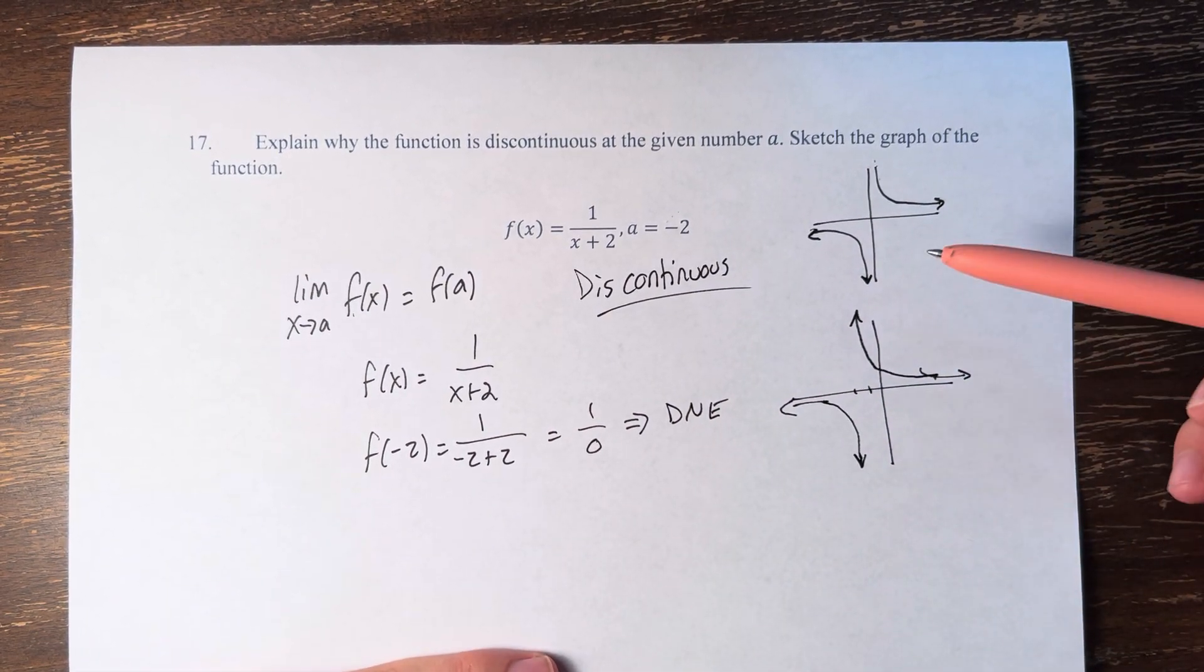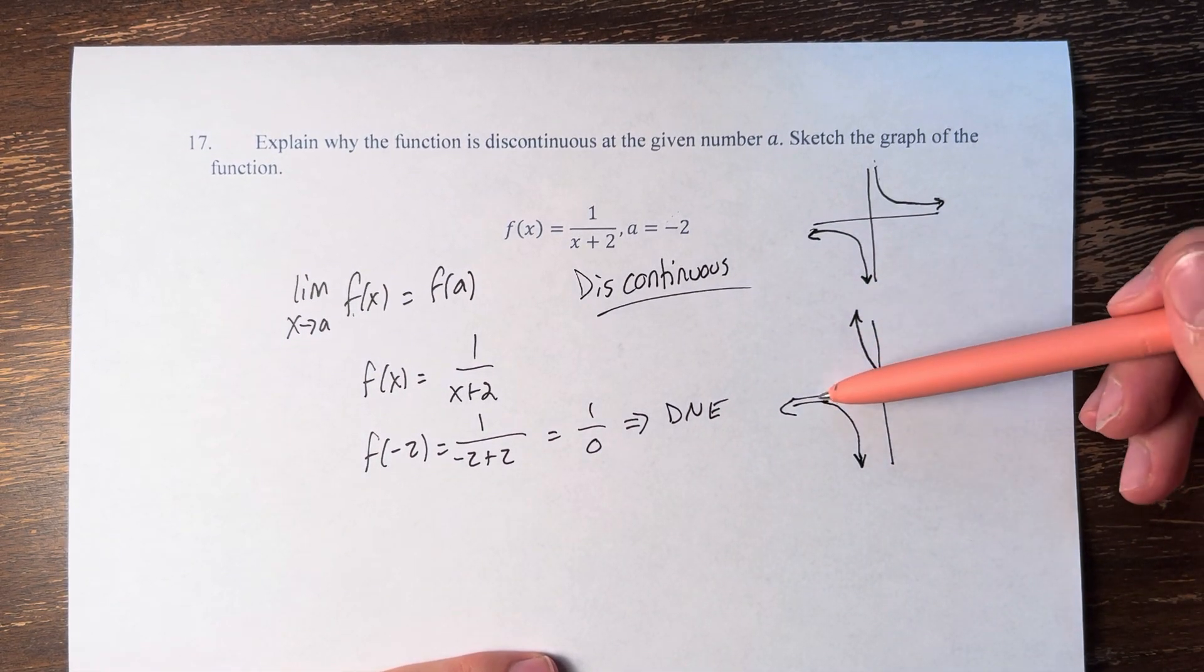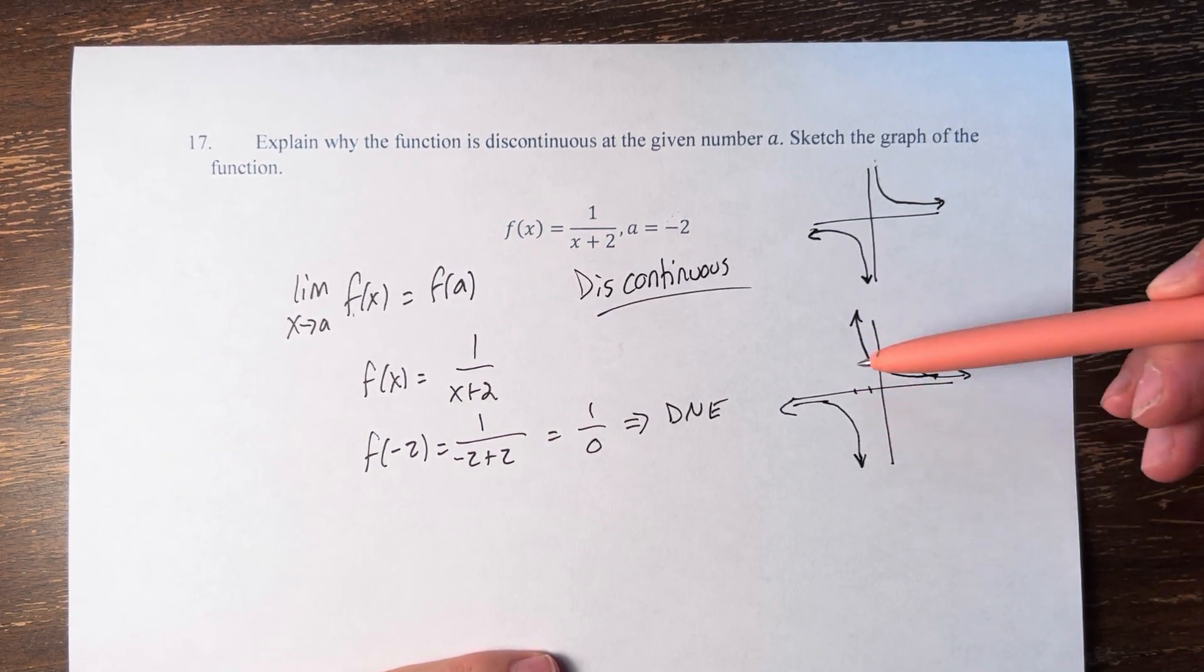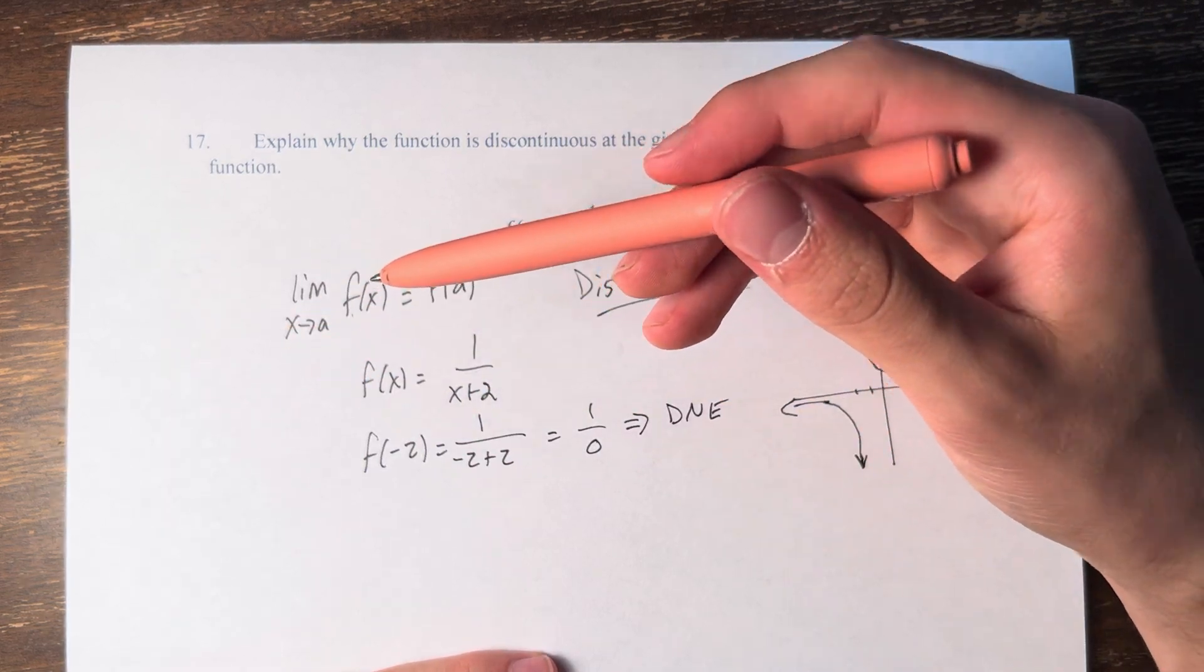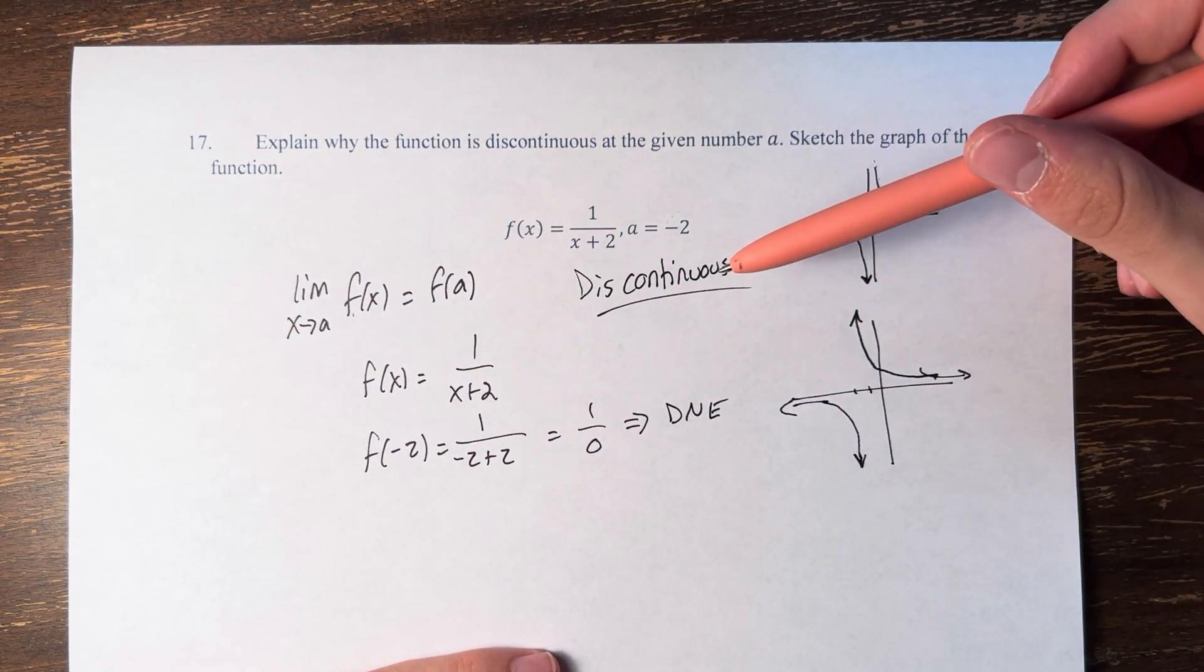And therefore, we can see why the function is discontinuous, because it's going off in opposite directions and there's no actual value of the function. It's just going off to infinity in both directions. But either way, by the graph or by the calculations, the function is discontinuous at this point.